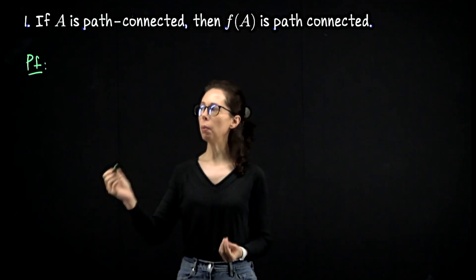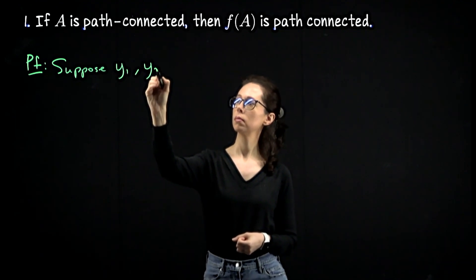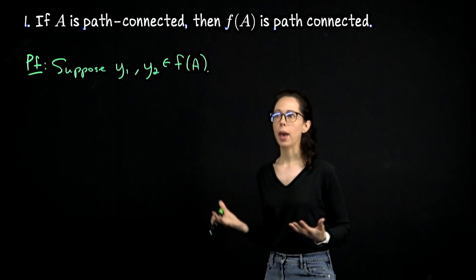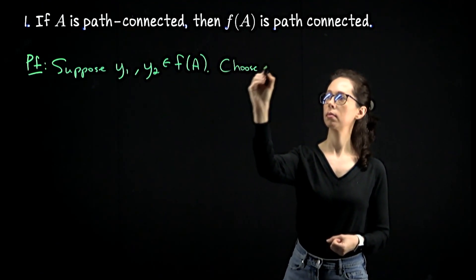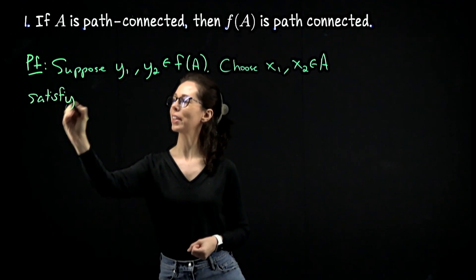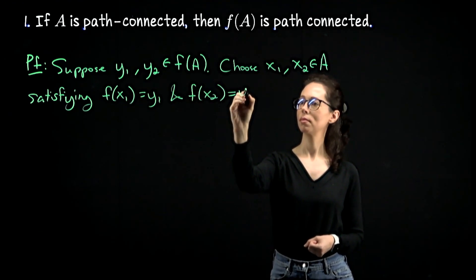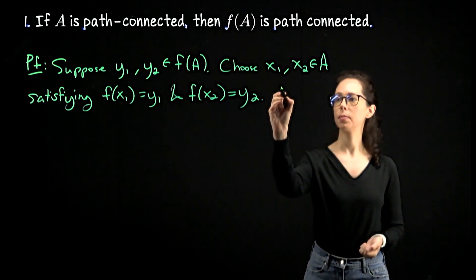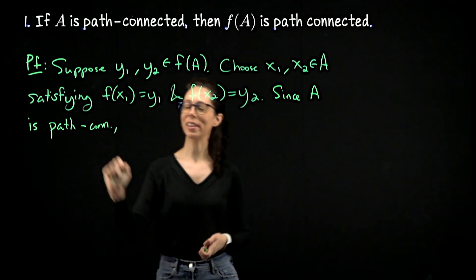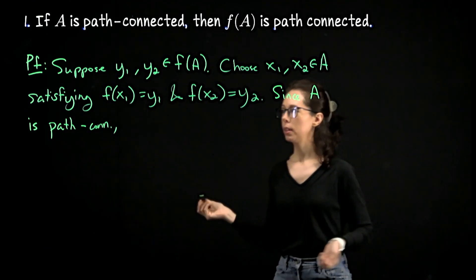Suppose y1 and y2 are outputs in the range of this function f of A. Choose inputs x1 and x2 from A which get mapped there. Since A is path connected, abbreviated like that,